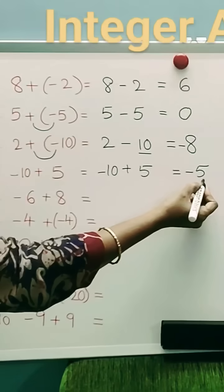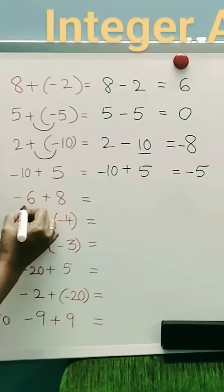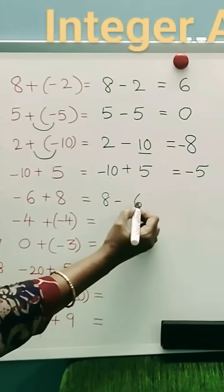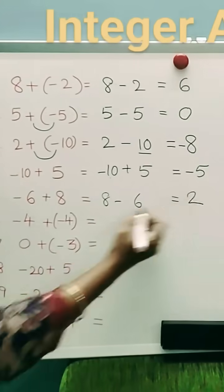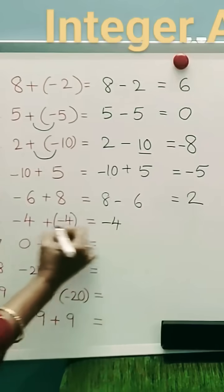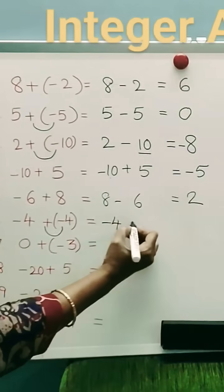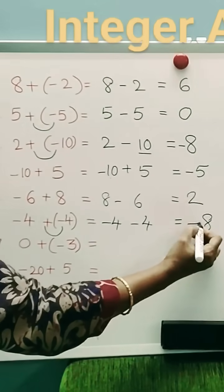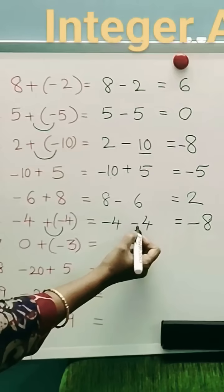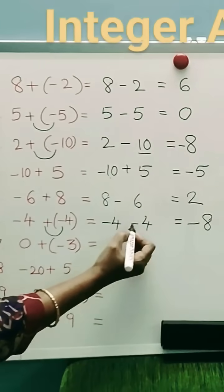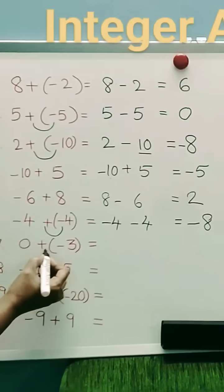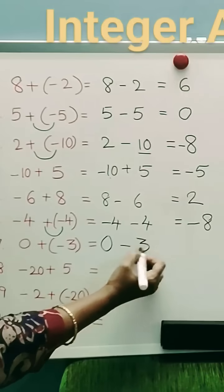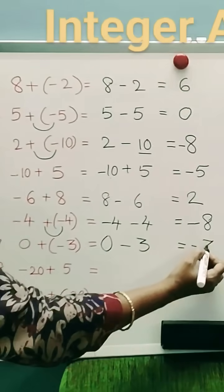10 minus 5 is 5, sign of the bigger number. Minus 6 plus 8: 8 minus 6 is 2. Minus 4 plus into minus is minus, minus 4 minus 8. Both are negative, we have to add and the sign will be minus. Plus into minus is minus, minus minus 3.